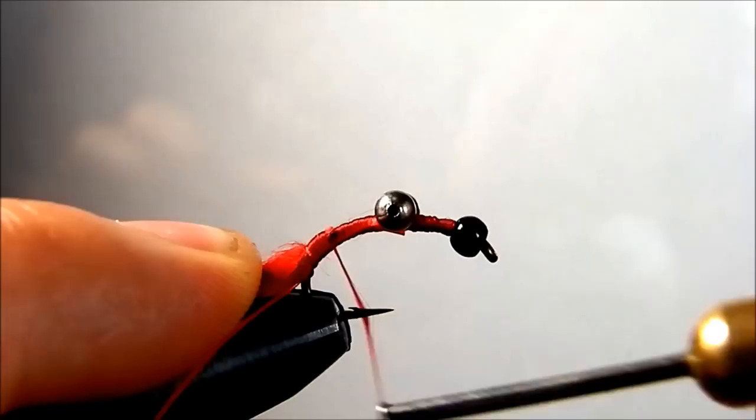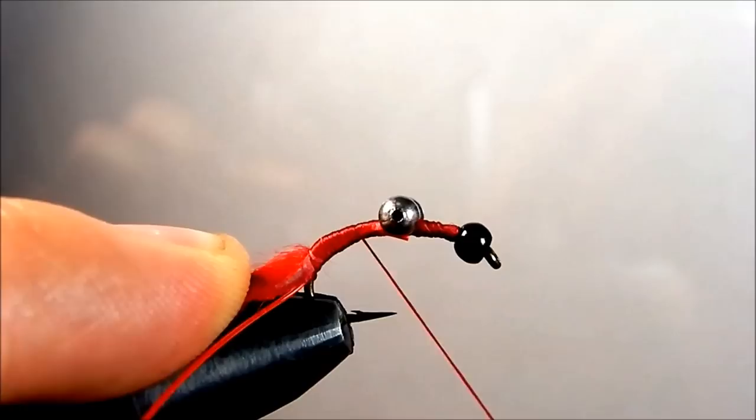And really, the only reason we're tying it in with the thread at all is to keep it from sliding out from underneath the amnesia. The amnesia is what we're going to use to actually lock it to the hook shank.